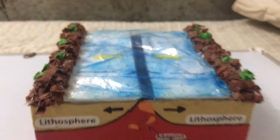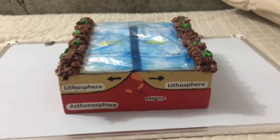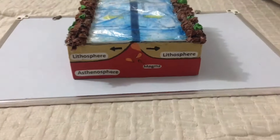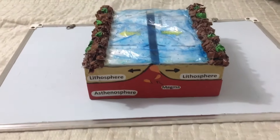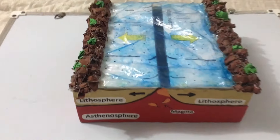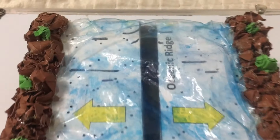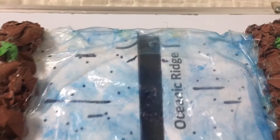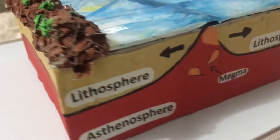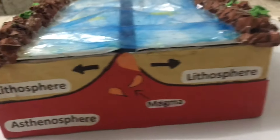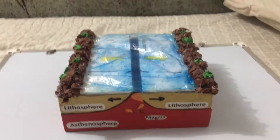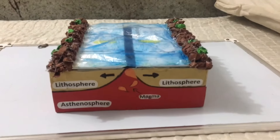A divergent boundary occurs when two tectonic plates move away from each other. Along these boundaries, earthquakes are common, and magma, or molten rock, rises from the earth's mantle to the surface, solidifying to create a new oceanic crust.